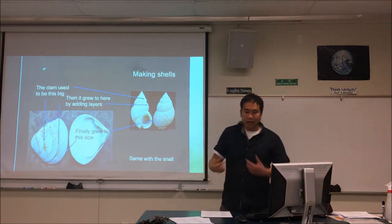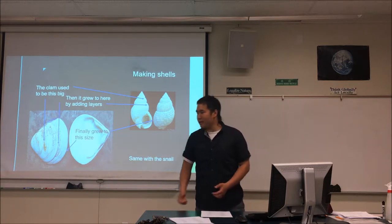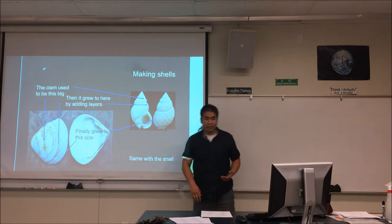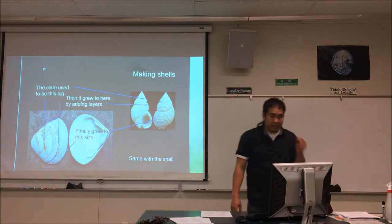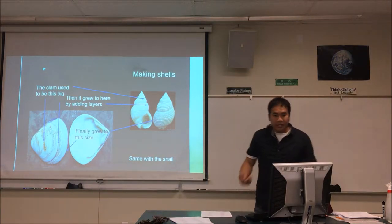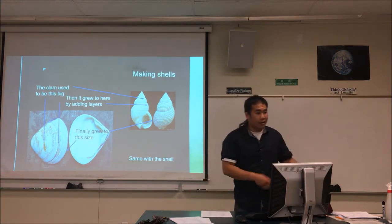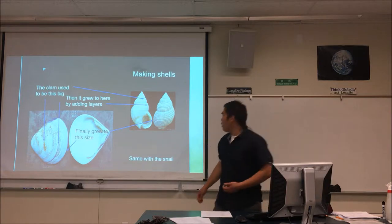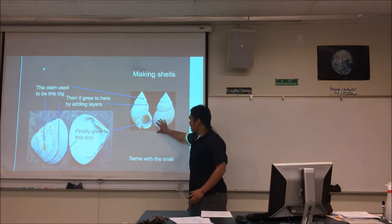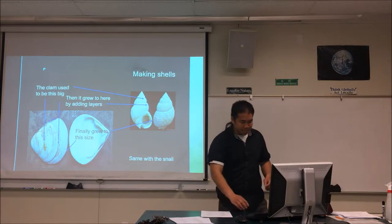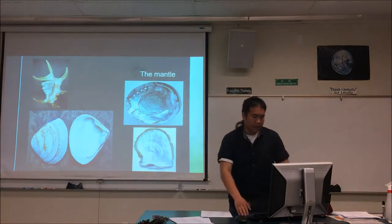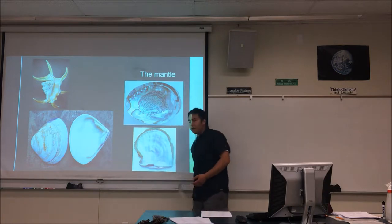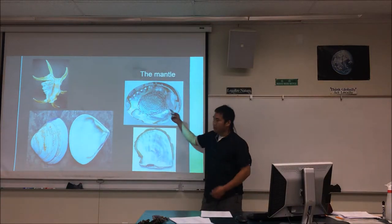It just keeps secreting layer upon layer of calcium carbonate, and it hardens, growing from a tiny snail to a big one. If you see a tiny seashell snail, that means it died at that age. Here's an oyster, pismo clam, abalone, and a spider conch.